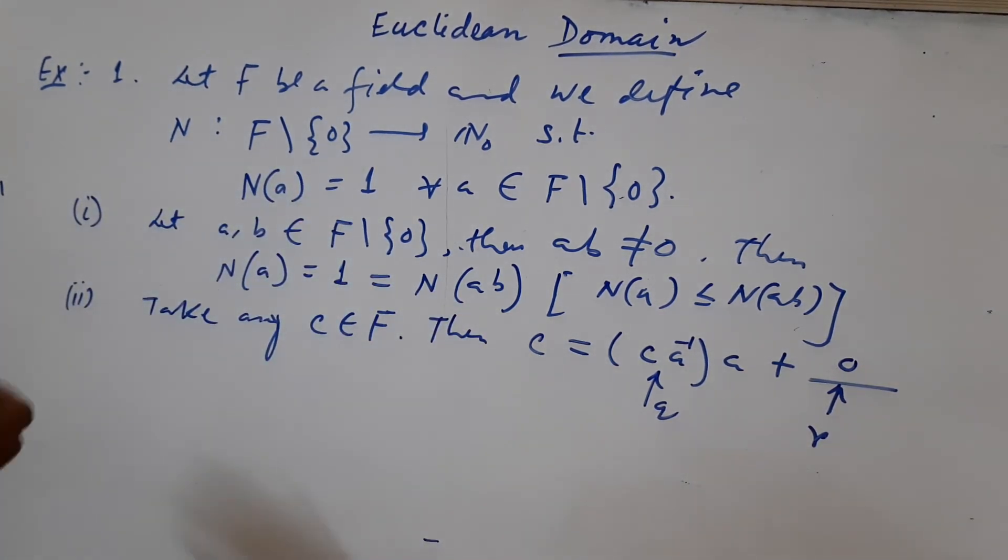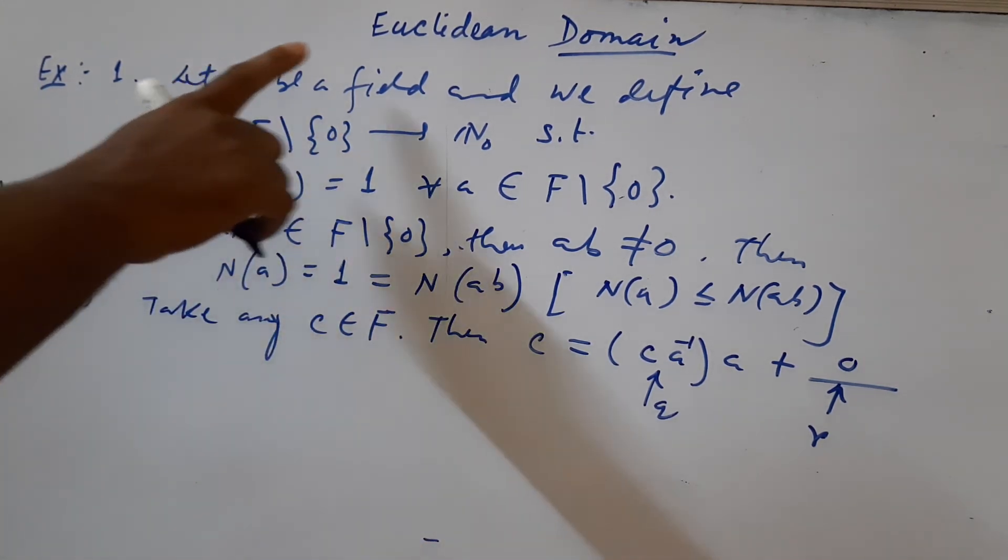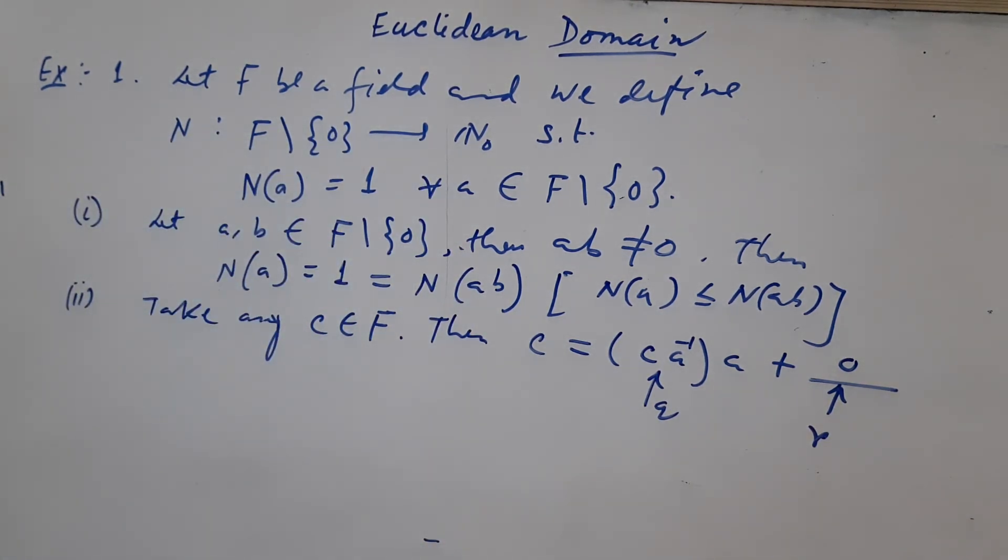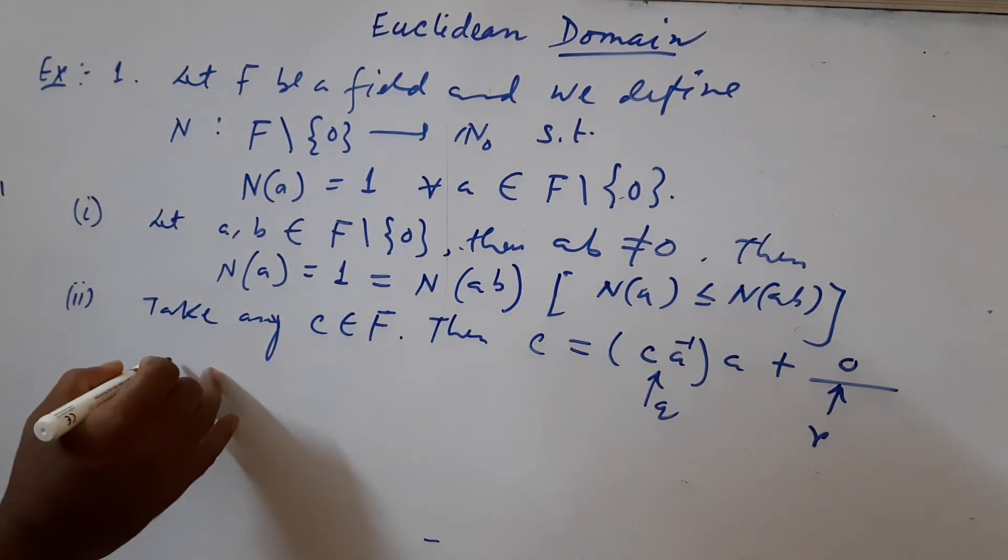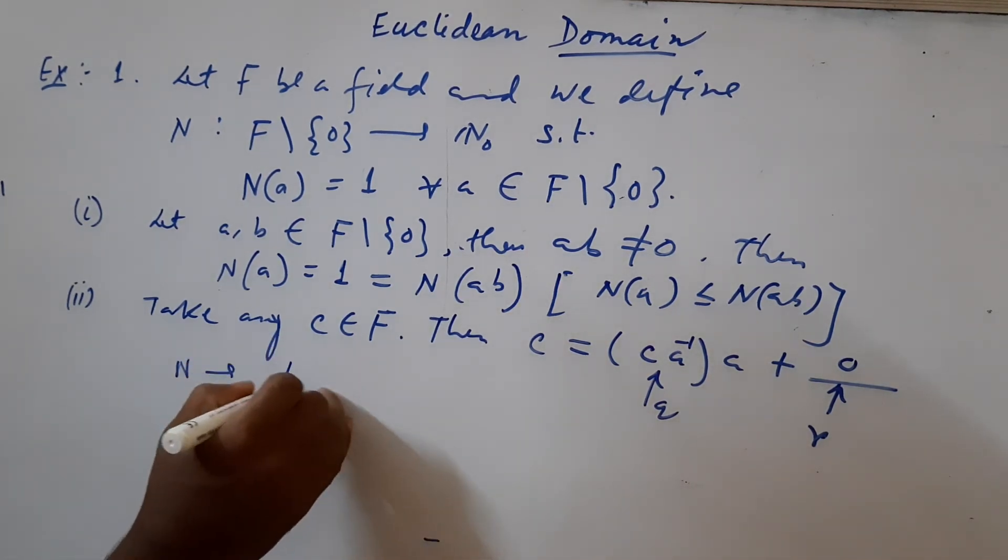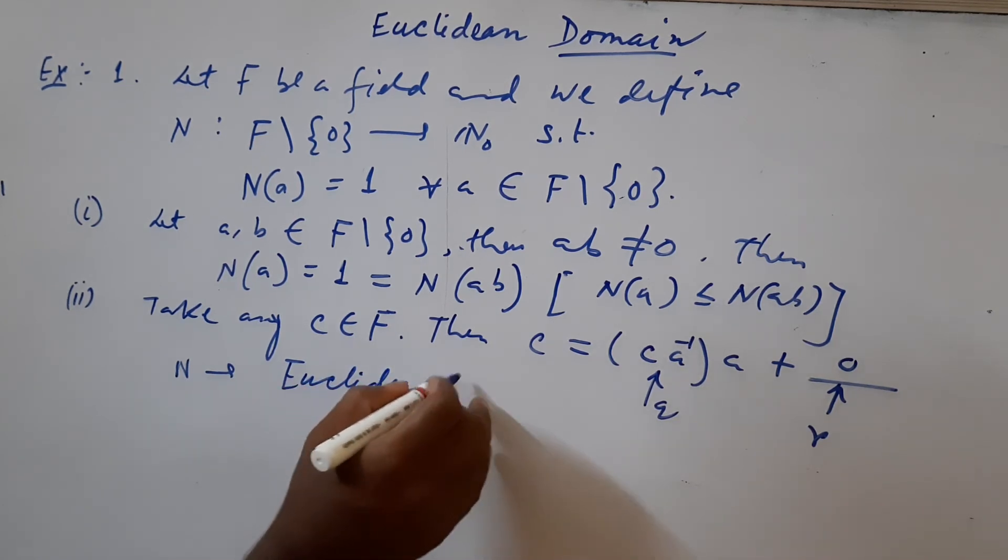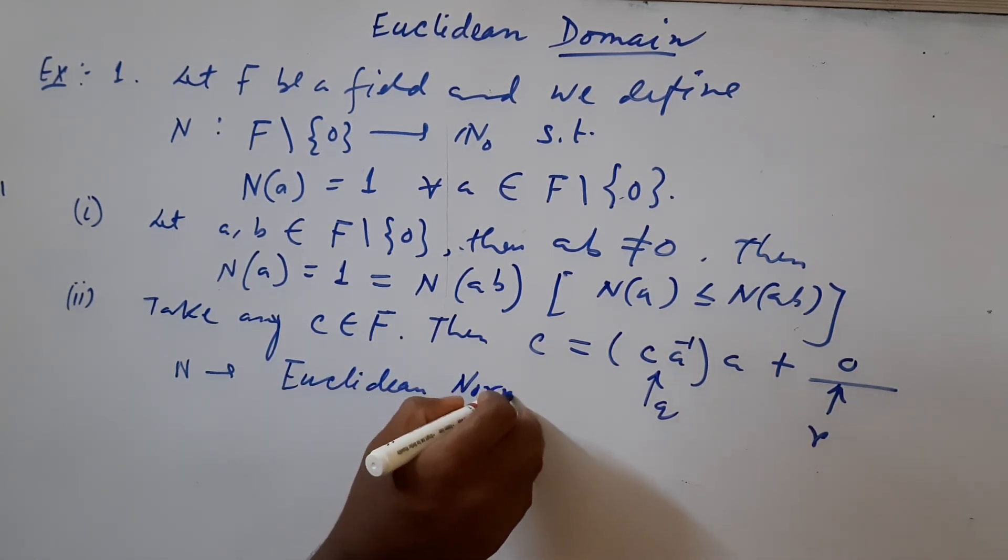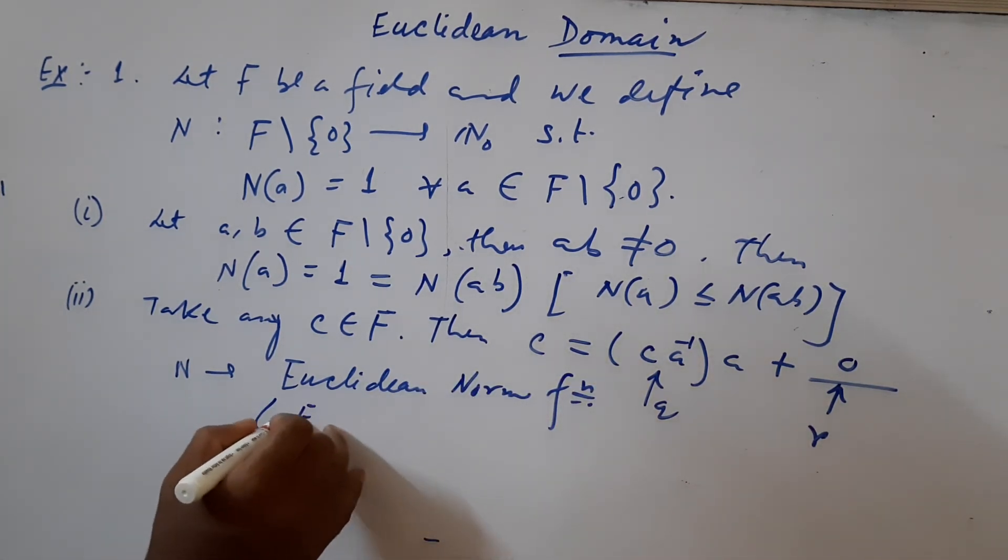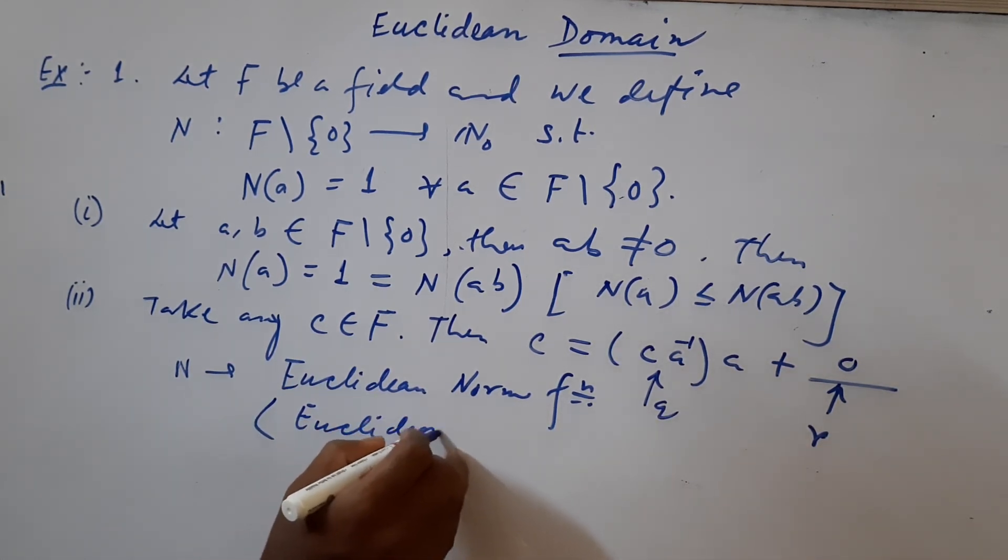The conclusion is that any field with the function N defined by this becomes a Euclidean domain. Here, the function N is called Euclidean norm function or Euclidean valuation.